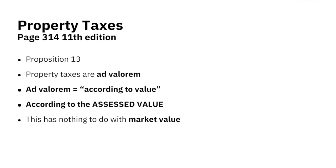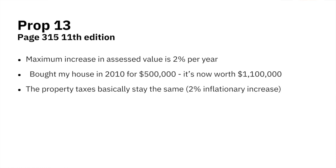According to what value? According to the assessed value. We pay property taxes not tied to the market value, but tied to a whole different set of value called the assessed value. For this reason, if I told you my house was assessed at $600,000, you have no clue what the real value of my home is. My house could be worth $2.5 million, but I might still be paying property taxes on it like it was worth $600,000.